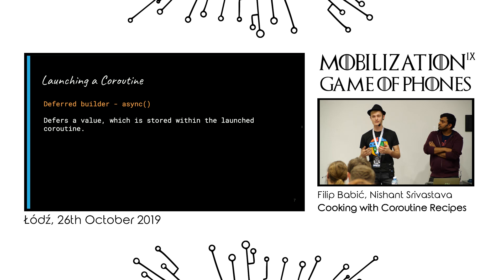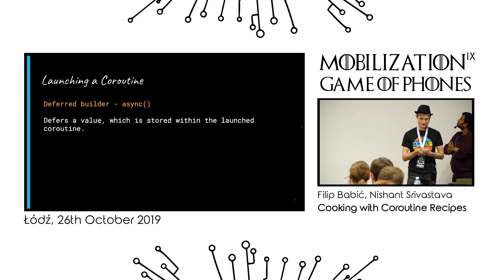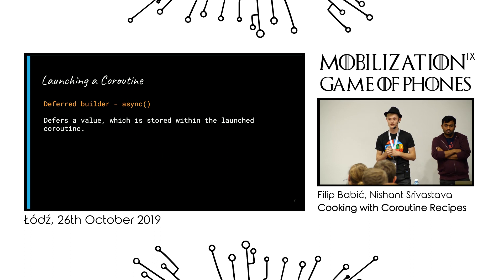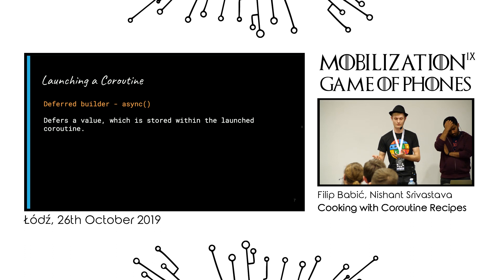There are different cases where you might use something else, like the async builder — also called the deferred builder because it defers value production into a different thread, and then you can await that value and consume it later. Deferring is the process of promising a value, which is why it's constantly compared to promises and futures in JavaScript or Java. You promise there's going to be some value in the future, and once you call await, you get that value.